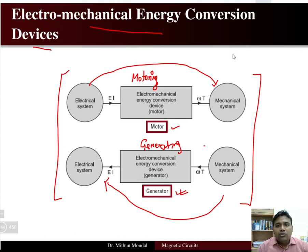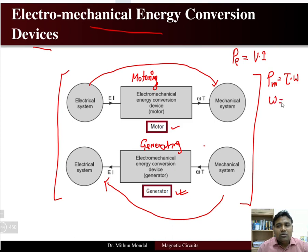We know that electrical power is equal to the product of voltage into current, and mechanical power is equal to torque into omega, where omega is the speed with which the machine or the shaft is rotated in angular motion.